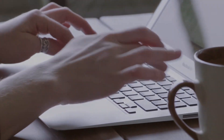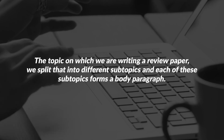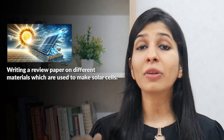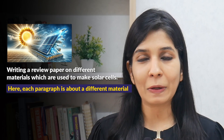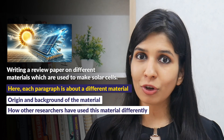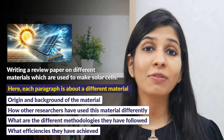Now coming to body paragraphs — what exactly are these? Basically, the topic on which we are writing our review paper is split into different subtopics, and each of these subtopics forms a body paragraph. Every body paragraph is going to have a central theme, and in the paragraph we talk about what other researchers have done in the field and critically analyze their work. For example, if I were to write a review paper on the different materials used to make solar cells, each body paragraph would be about a different material — covering the origin and background of that material, how researchers have used it, the methodologies they followed, and what efficiencies they achieved in making those solar cells.